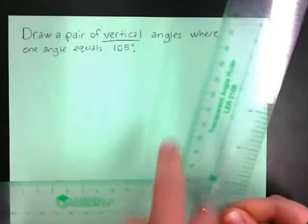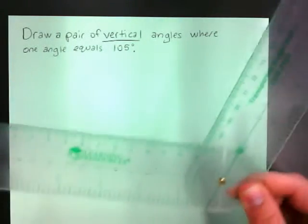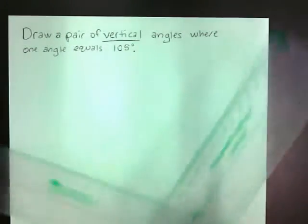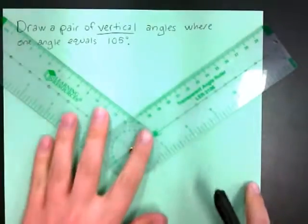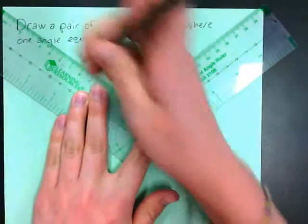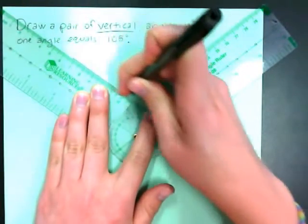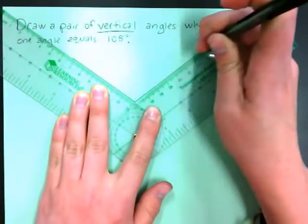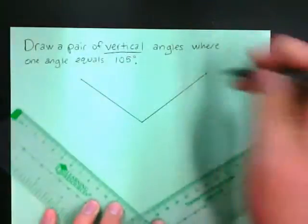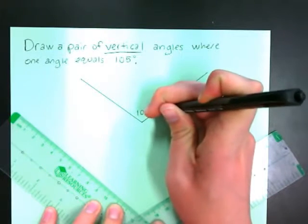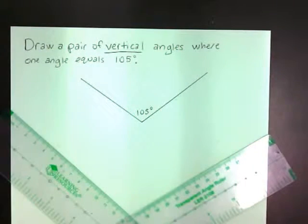I notice it's obtuse, greater than 90 degrees, so I know that this is reasonable. And I'm going to draw my 105 degree angle. I'm going to go ahead and label that 105 degrees.